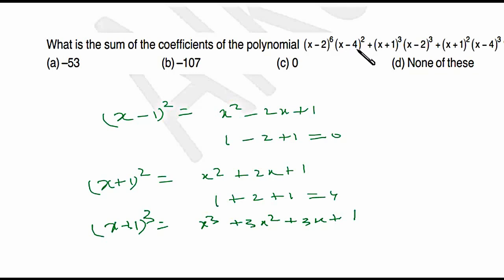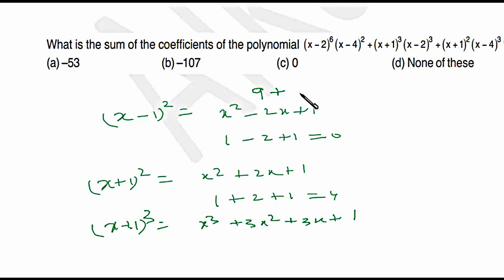Next, (1 + 1)³ = 2³ = 8, multiplied by (1 − 2)³ = (−1)³ = −1. So that term gives 8 × (−1) = −8.